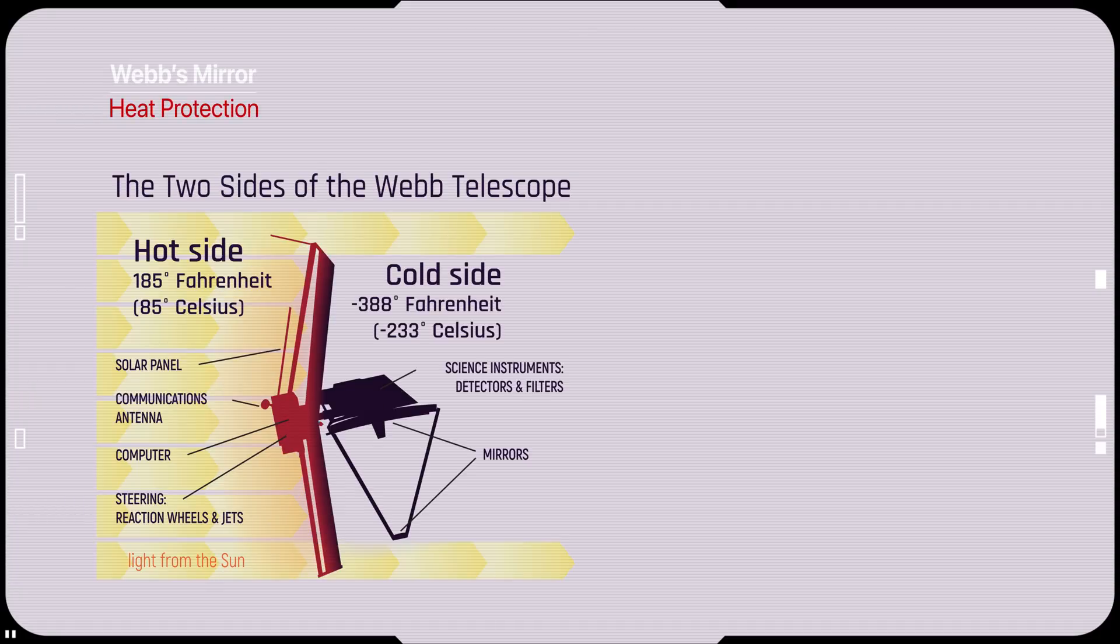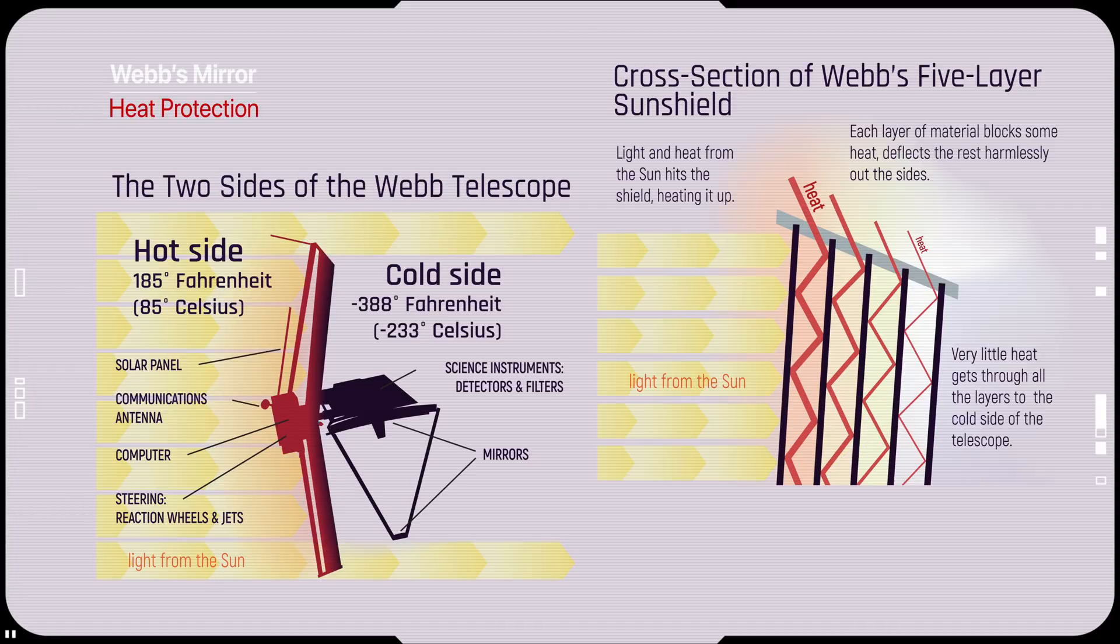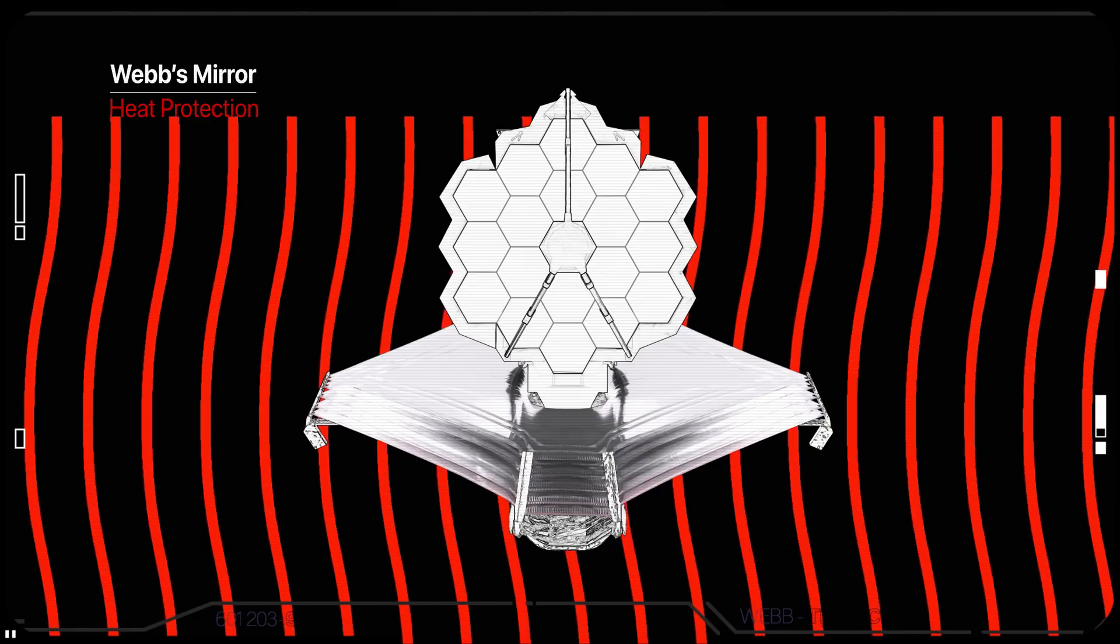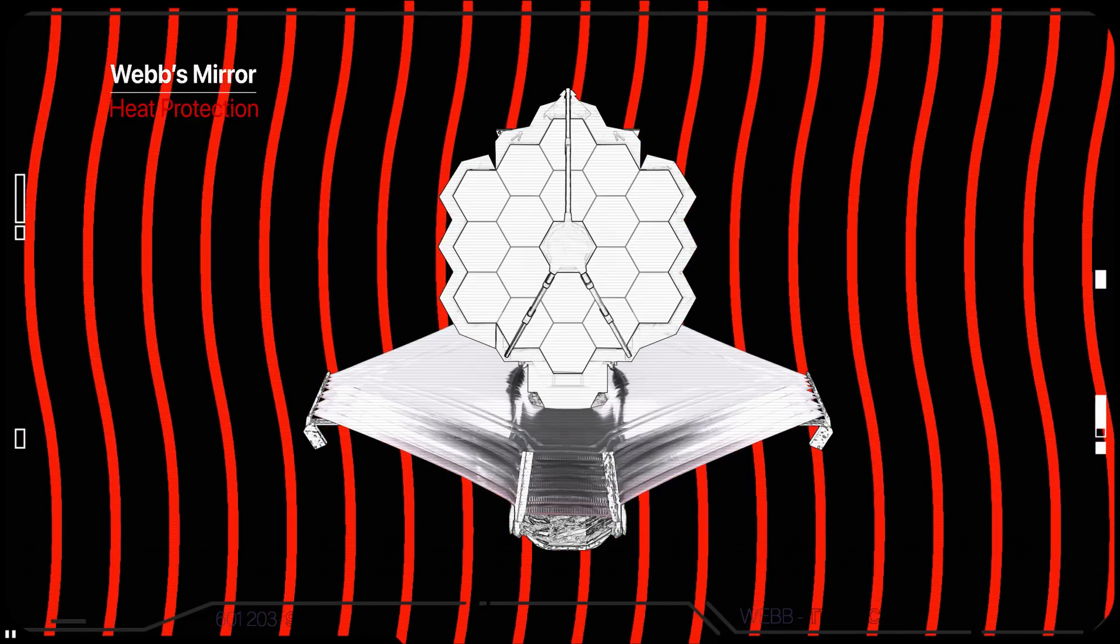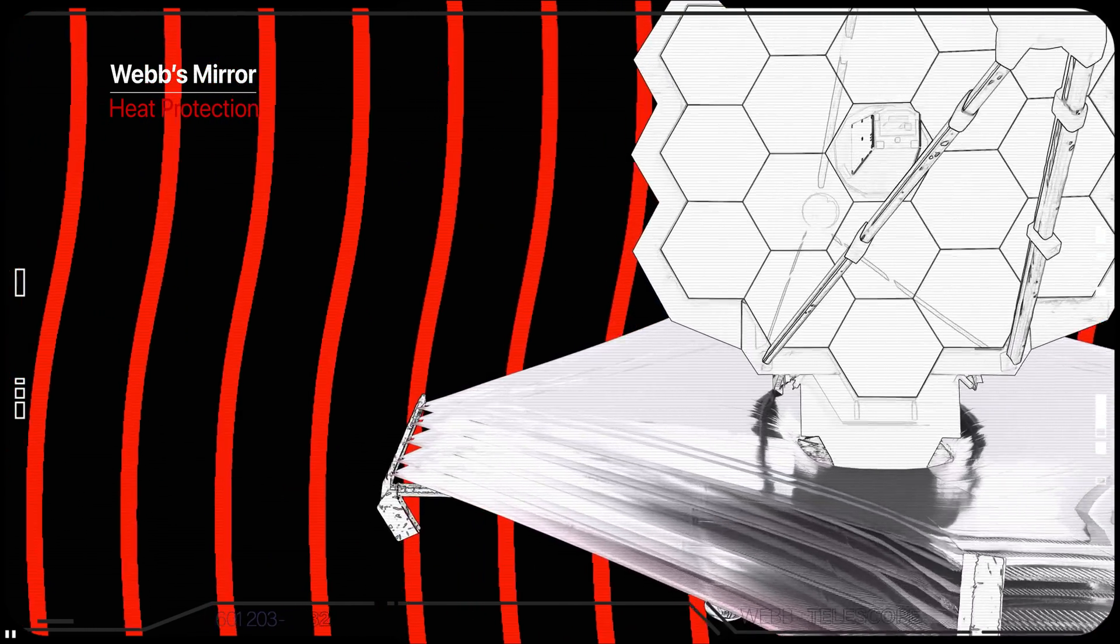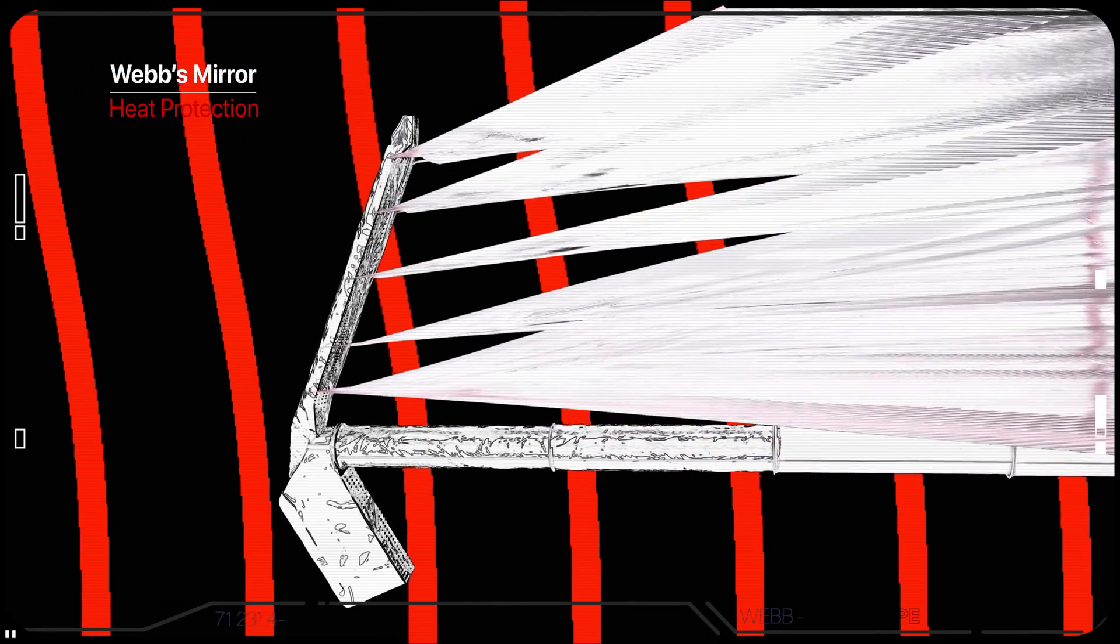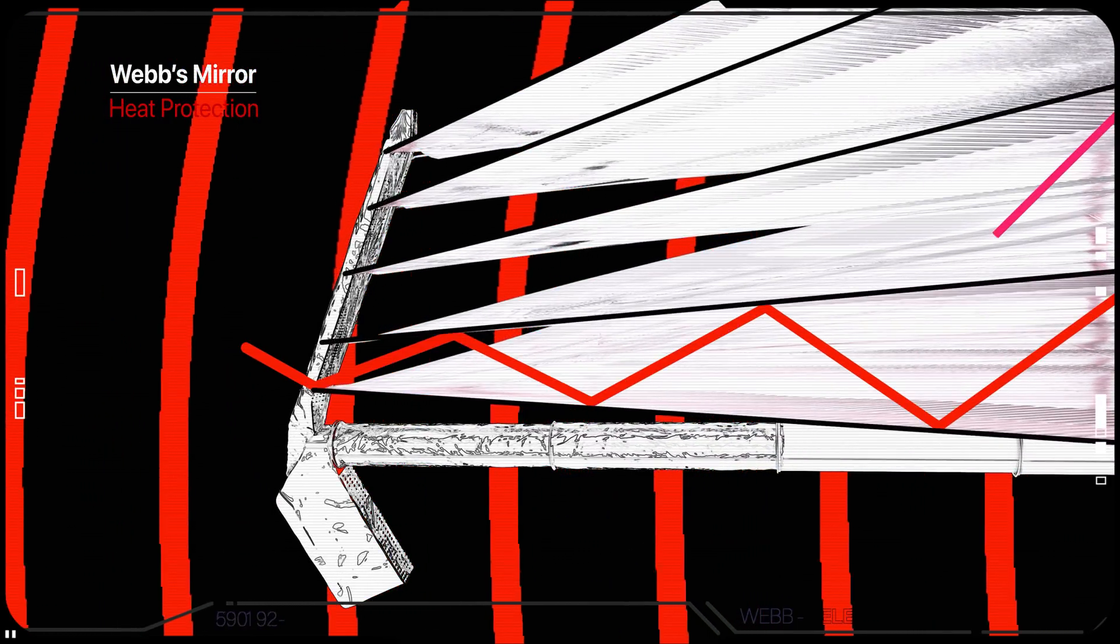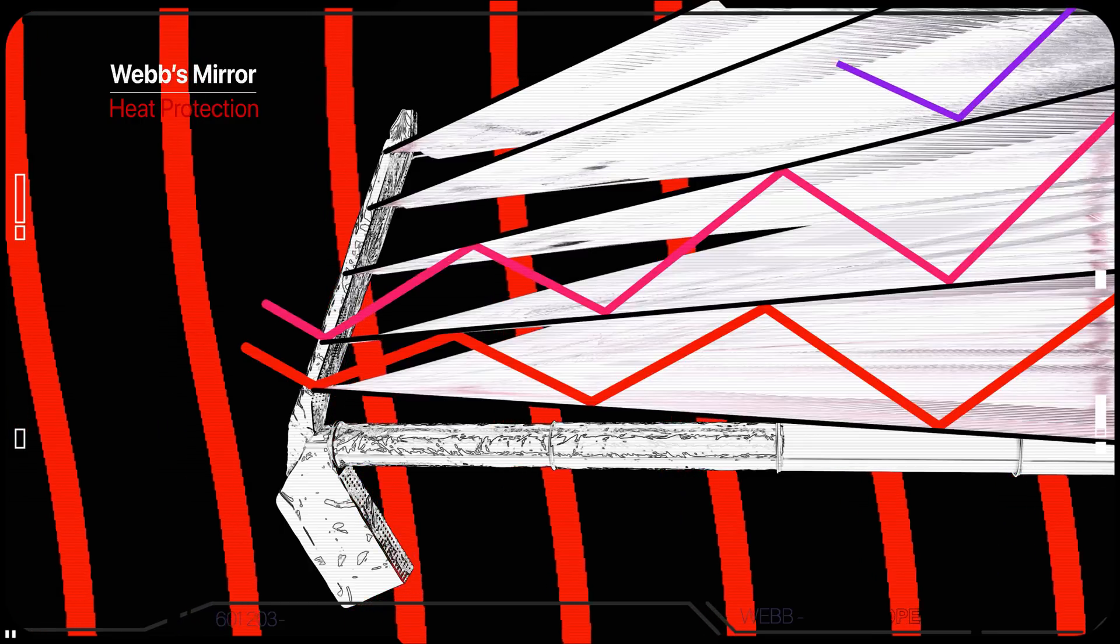One further challenge is to keep Webb's mirror cold. Webb primarily observes infrared light, which can sometimes be felt as heat. If Webb's mirror was the same temperature as the Hubble Space Telescope's, the faint infrared light from distant galaxies would be lost in the infrared glow of the mirror. Thus, Webb needs to be very cold. With its mirror at around minus 220 degrees Celsius, the mirror as a whole must be able to withstand these cold temperatures as well as hold its shape.